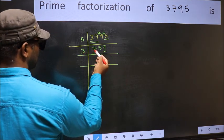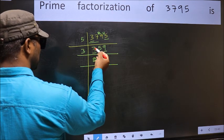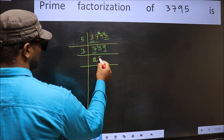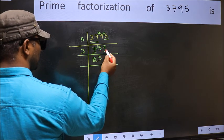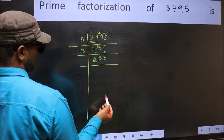First number 7. A number close to 7 in 3 table is 3 2's 6. 7 minus 6 is 1, 1 carried forward 15. When do we get 15 in 3 table? 3 5's 15. The other number 9. When do we get 9 in 3 table? 3 3's 9.